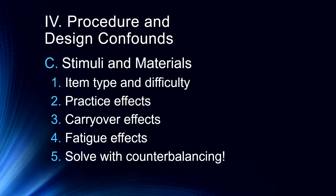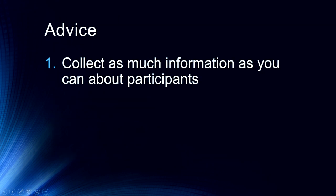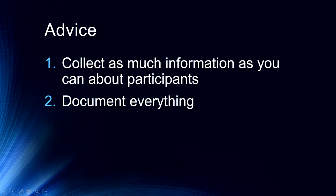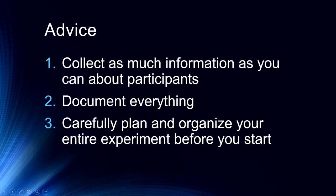So we solve these issues with counterbalancing the order. In later lectures, we're going to talk about counterbalancing particularly within-subjects designs. The last bit of advice: collect as much information as you can about participants — height, weight, gender, sex, age, what they had for breakfast — try to be as controlled as possible because you never know what might be important. Document everything: day, time, temperature, unusual circumstances. And finally, carefully plan and organize everything before you even get started — have people assigned to conditions before they arrive so nothing is potentially biased. Well, that is your introduction to confounds and experimental control. We'll be looking at different types of research designs in our next lectures.